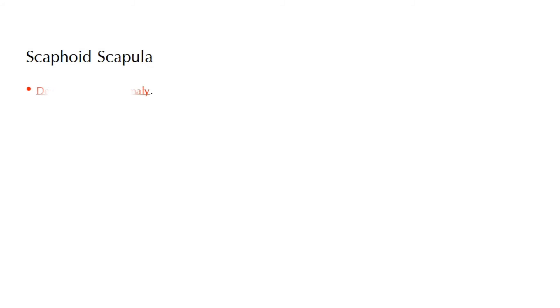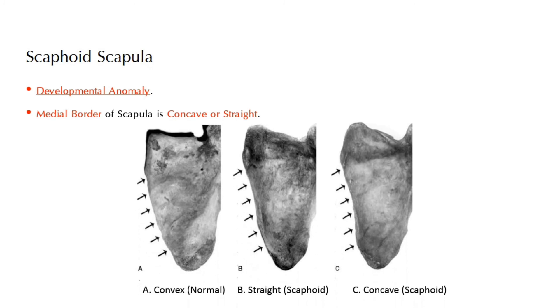Next is scaphoid scapula. It is a developmental anomaly. In this case, the medial border of the scapula is concave, or sometimes straight, in contrast to the normal condition where the medial border is convex.